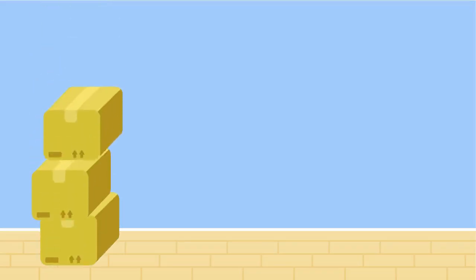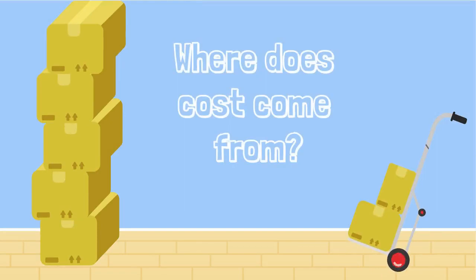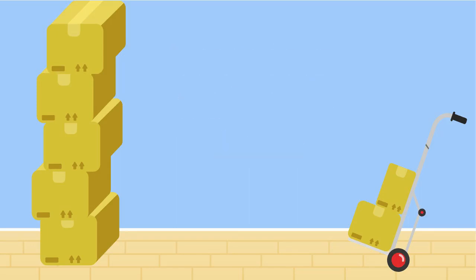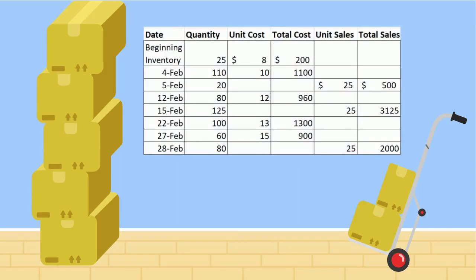Where did that $10 cost figure come from? That's how much we paid for the inventory item when we bought it. But what if we bought inventory several times and paid slightly different prices for the same inventory each time we bought it? Here's the record of our inventory purchases for the last month. There are four different amounts we paid for our inventory. When we sell one item of inventory, which cost do we use and why?